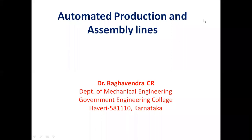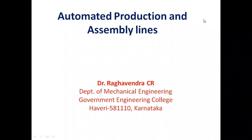Programmable automation is suitable for different product configurations. The system reads program codes and operates accordingly — when a modified program is fed into the system, it follows the new instructions and changes the sequence of operations. An example is CNC milling machines, which can be reprogrammed to switch from threading operations to facing operations.